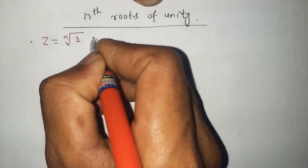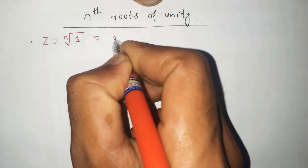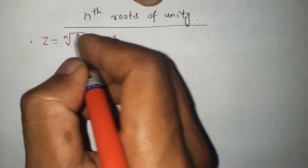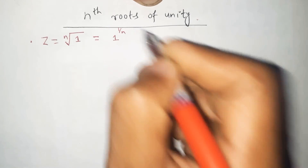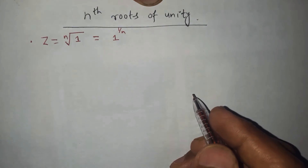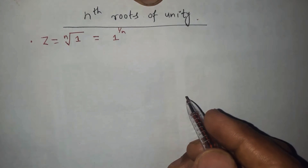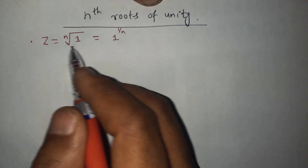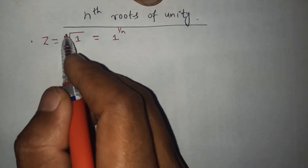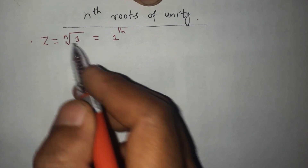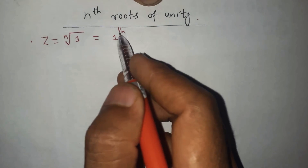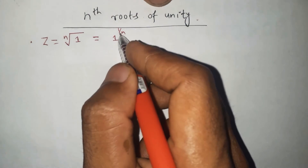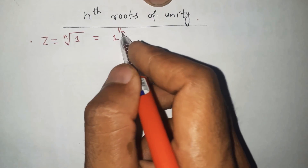This can be further written as 1 to the power of 1 over n. Here we just use the simple property of indices — we can write this expression in the form 1 to the power of 1 over n by using the law of indices.